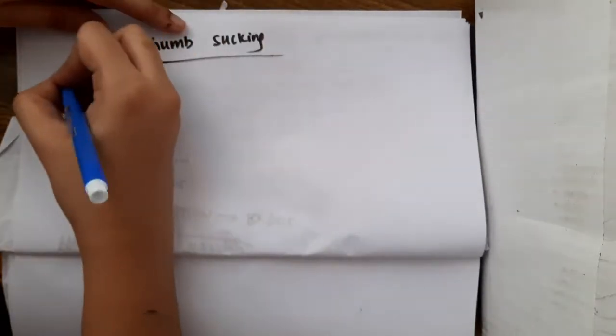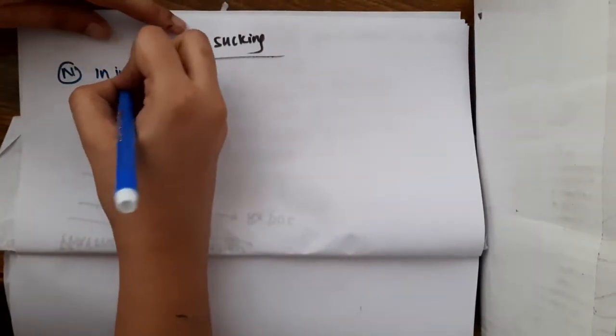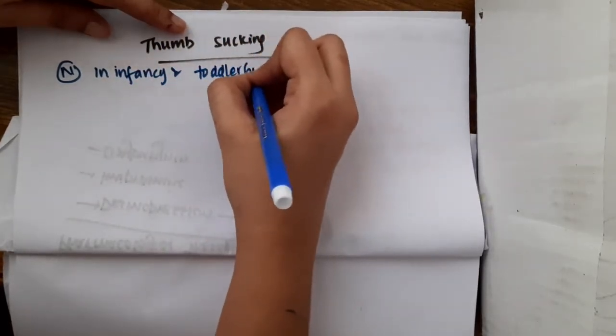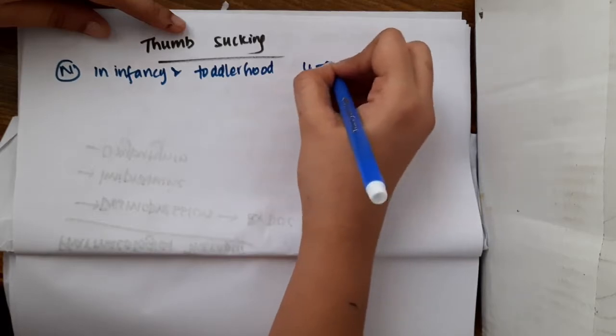Thumb sucking is normal in infancy and toddlerhood, up to the age group of around 4 to 5 years of age.